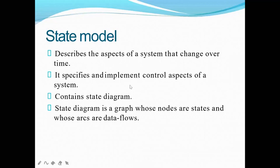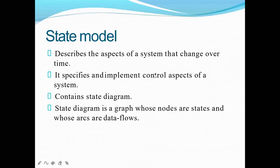The state model will contain the state diagram. This is very easy to remember: class model contains class diagram, state model contains state diagram. The state diagram is a graphical representation of all the states — all the nodes — you have to show using data flow diagrams. We will see in detail how the diagram looks and how you give the connectivity. Remember: in the state model, the object will change over the time period whenever it wants, and those changes should be reflected in your state model. It will contain the state diagram, which is a graphical representation of all the nodes.